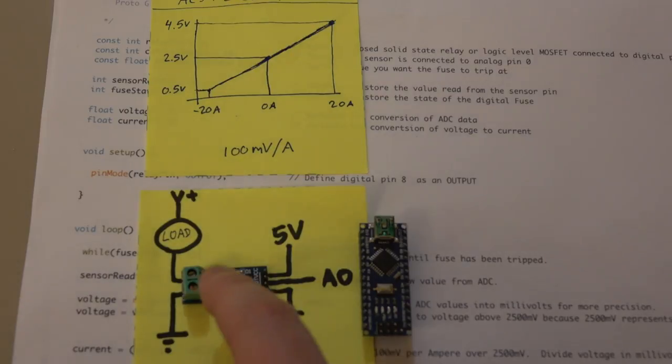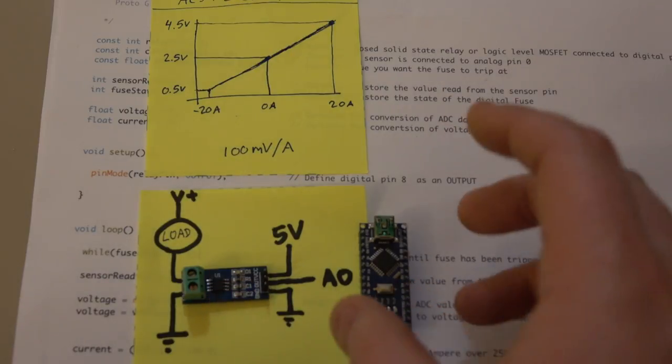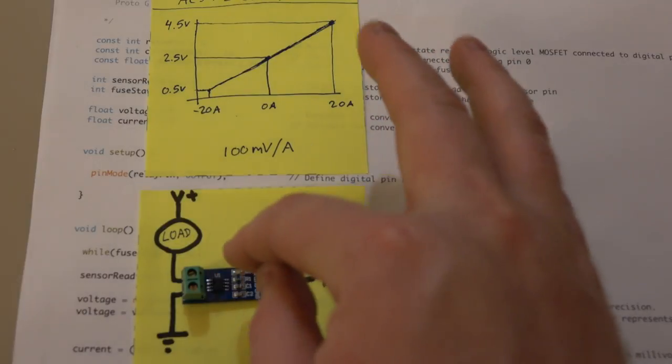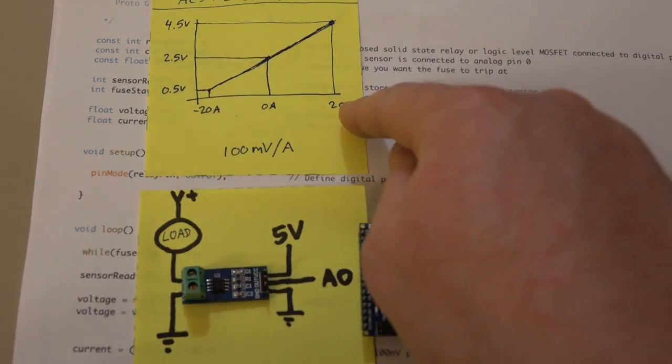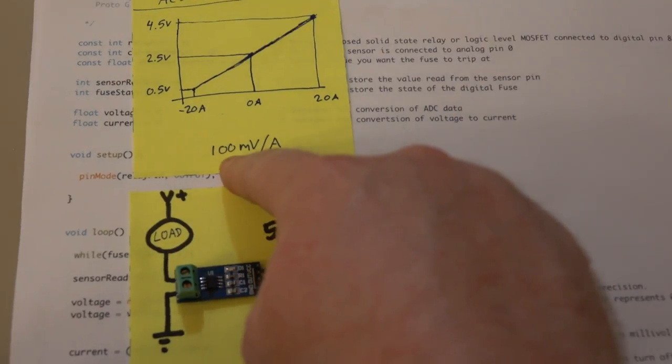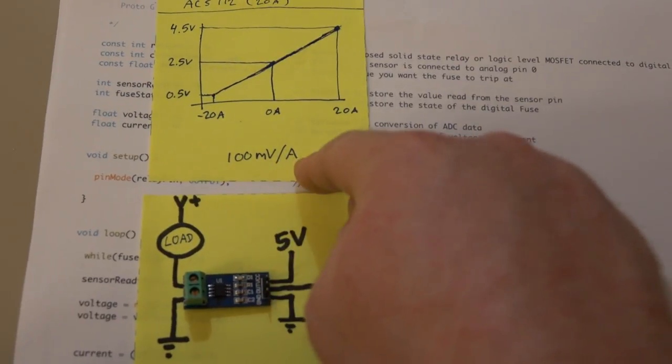Hey guys, I'm going to show you how you can use a current sensor to make a digital fuse for your project. For this video, I'm using an ACS712, which is a 20 amp current sensor with a sensitivity of 100 millivolts per amp.